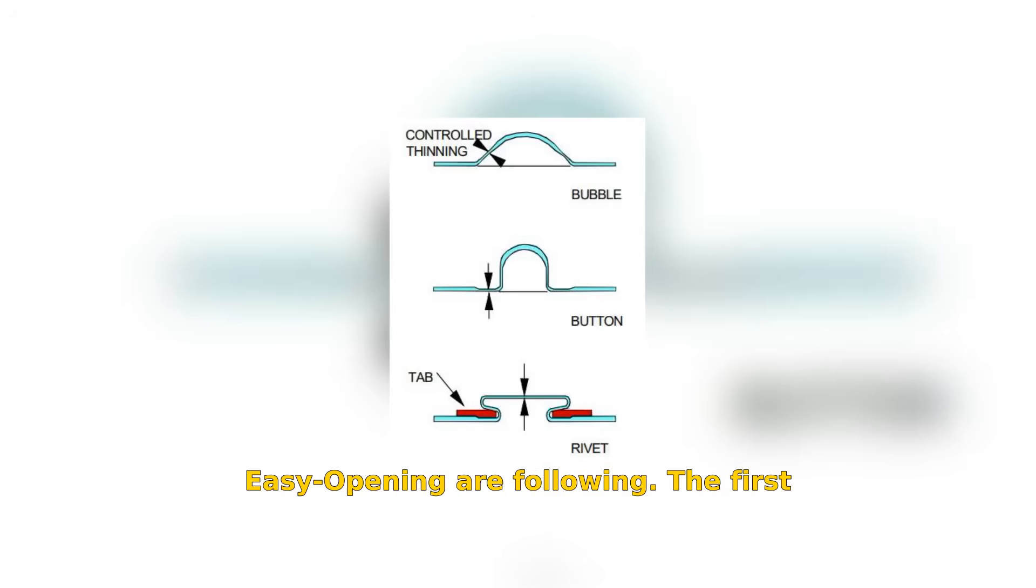Steps in the formation of the easy opening are following. The first stage is to form a bubble. The bubble is then redrawn to form the button. The base of the lid around the button is thinned to extend more metal into the button. When the tab has been placed over the button, the rivet is thinned to extend the metal in the finished rivet head.